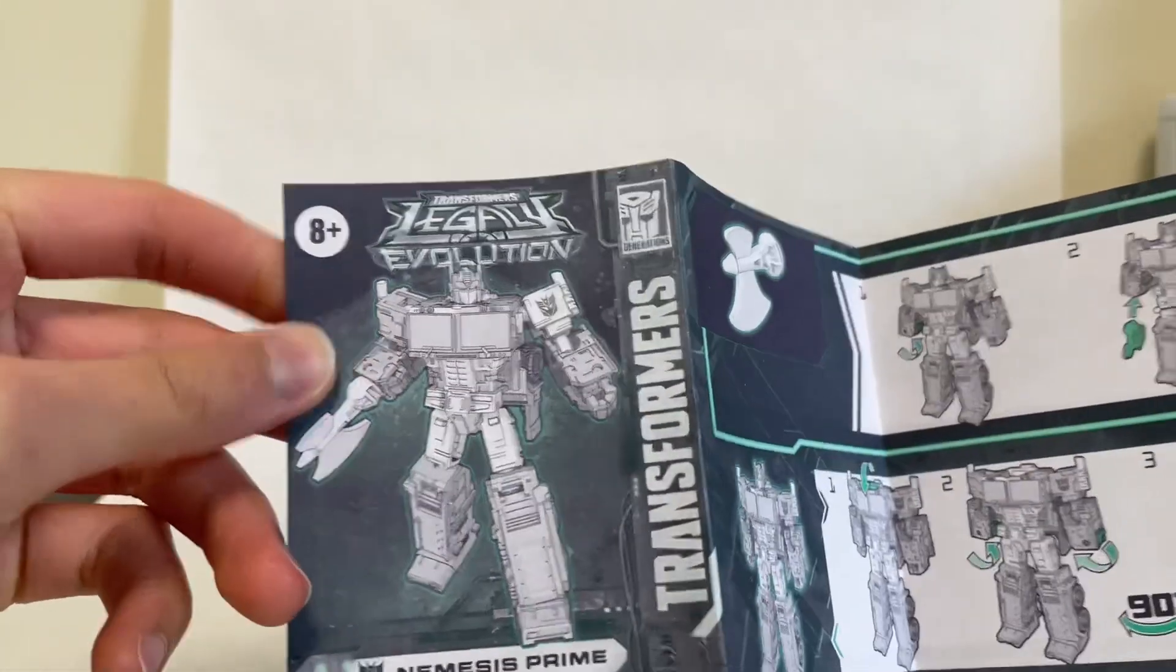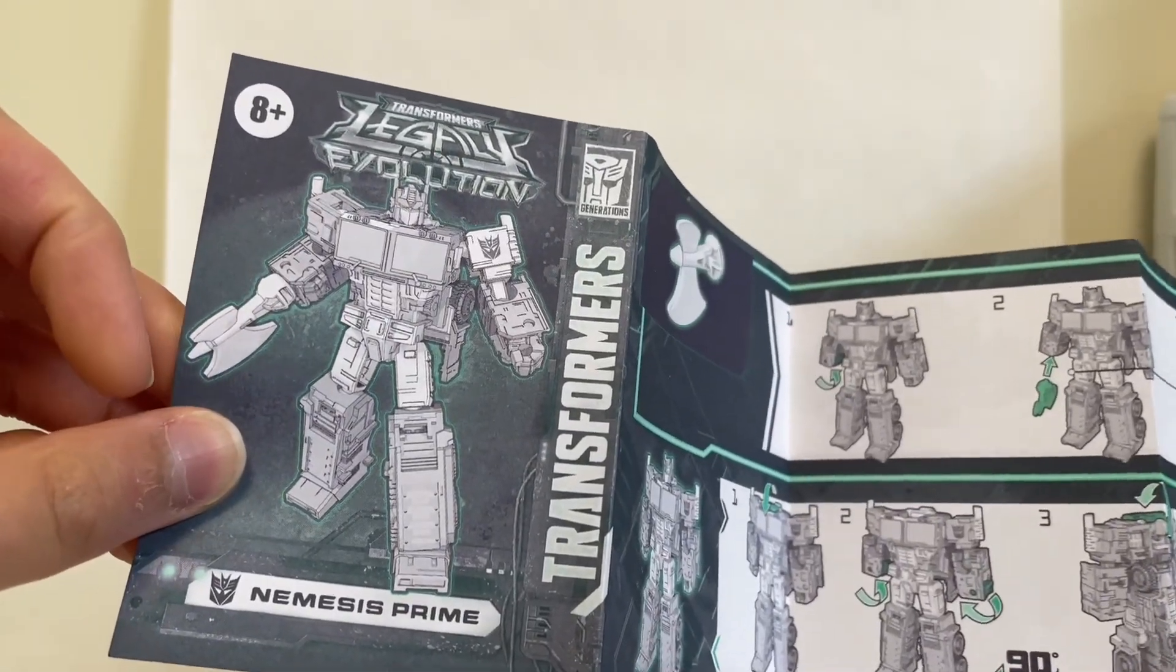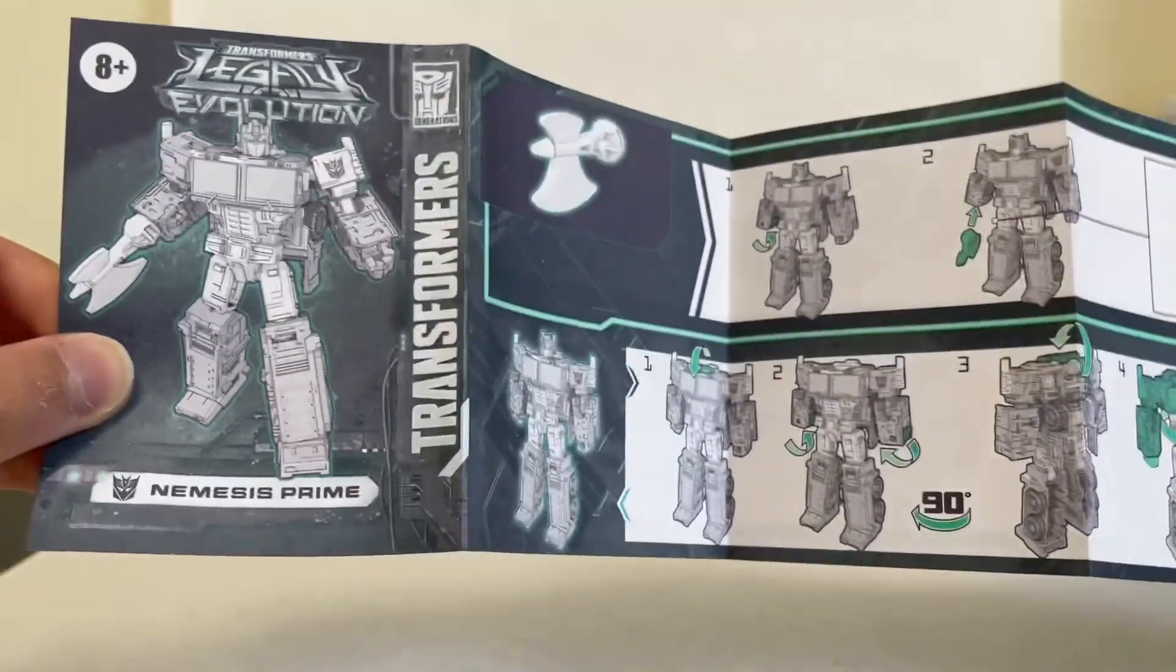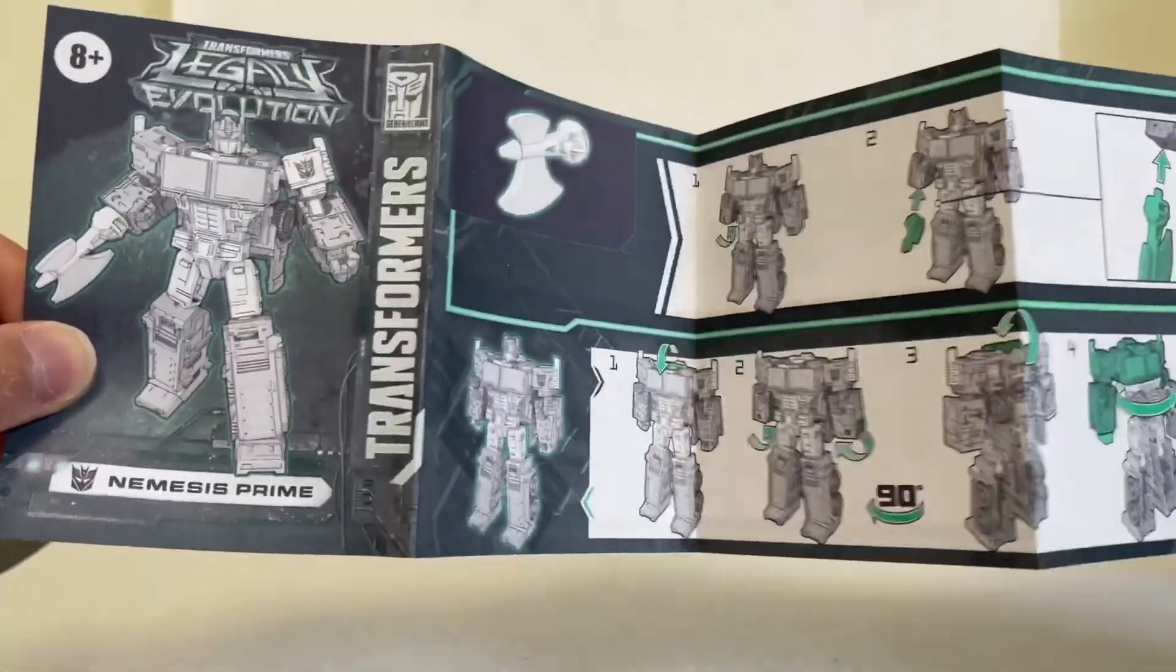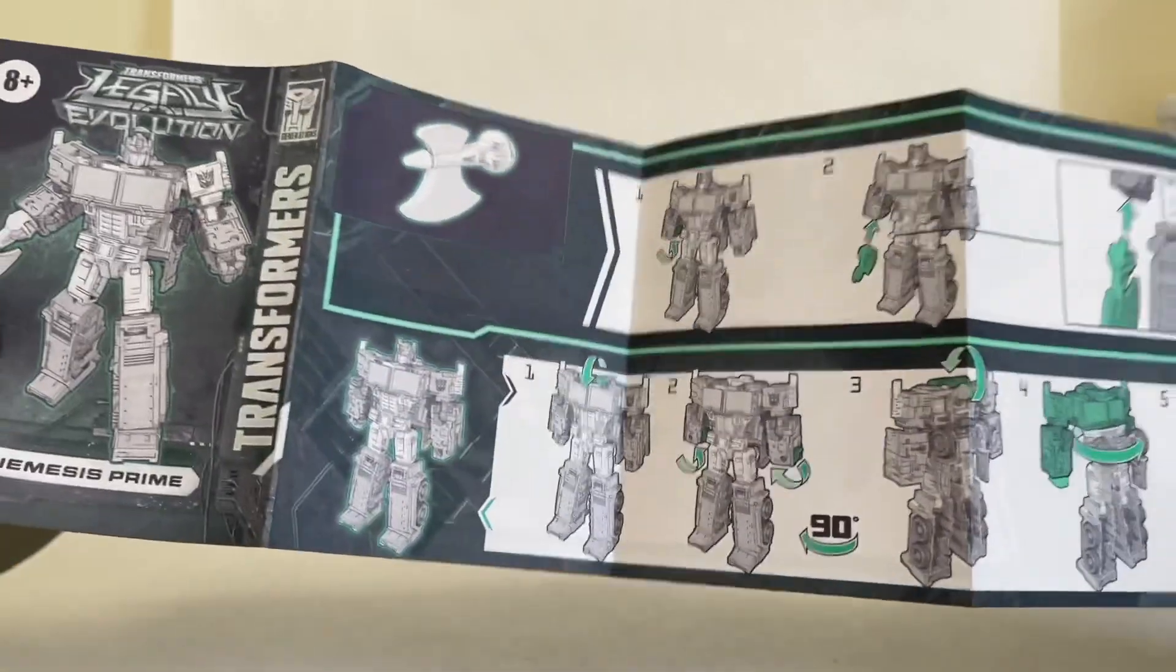You do get instructions, and originally if you saw my original video of Prime, you'll see that in the artwork for those instructions, he does have an axe, and it does show him using the axe and not the gun. And so now we know why, because they have been planning this Nemesis Prime mold from the beginning.